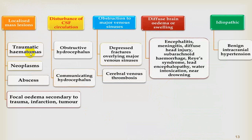Disturbances in CSF circulation include obstructive or communicating hydrocephalus. Venous sinus occlusions can result from fractures or thrombosis. Brain edema can arise from encephalitis, meningitis, head injury, subarachnoid hemorrhage, Reye syndrome, various encephalopathies, water intoxication, near drowning, or severe hypoxia. When the cause is unknown, it is called idiopathic intracranial hypertension or benign intracranial hypertension.